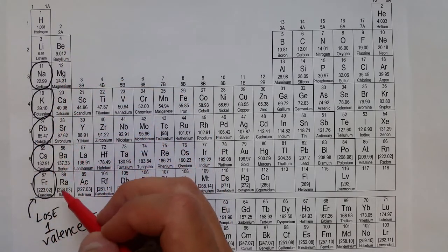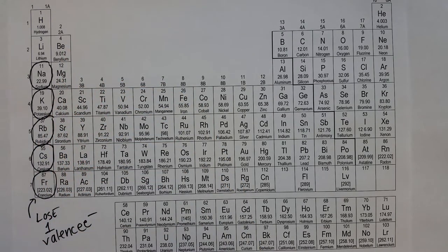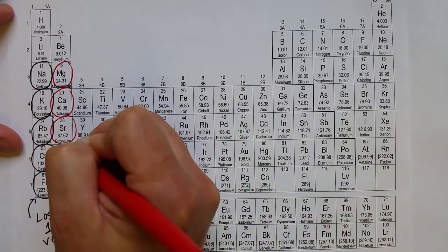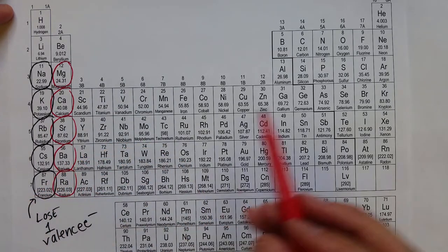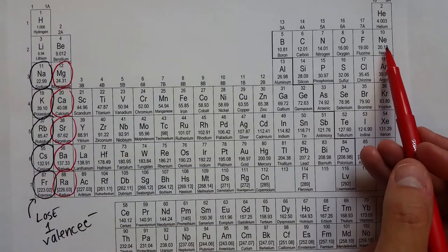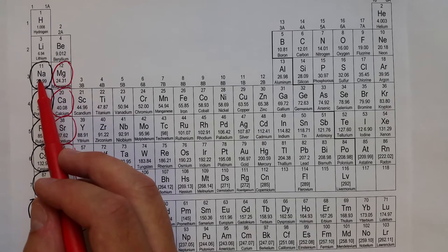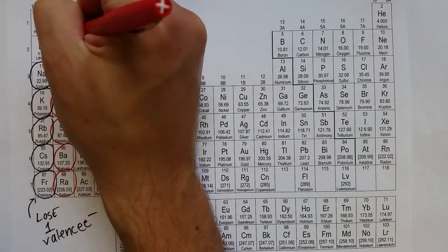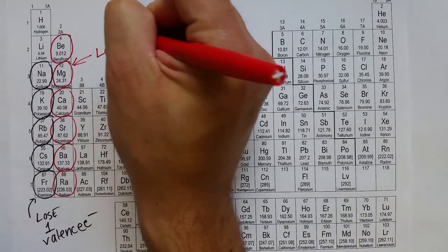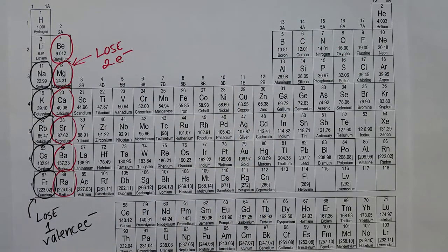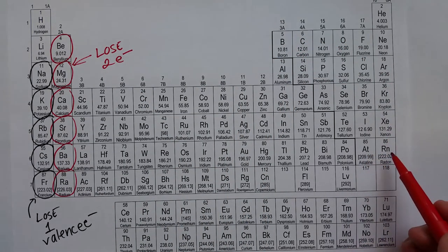Magnesium, calcium, strontium, and the rest of the alkaline earth metals will lose two valence electrons to achieve the octet rule. Magnesium loses two valence electrons and suddenly has the same electron configuration as neon, just like sodium did by losing one. So all of the group 2 alkaline earth metals will lose two valence electrons to get the stable electron configuration.